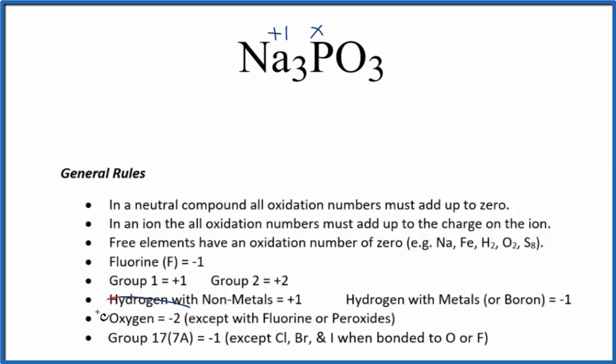And then oxygen, that's almost always minus 2, with a few exceptions. So each oxygen is minus 2. It's all going to add up to zero since it's a neutral compound.